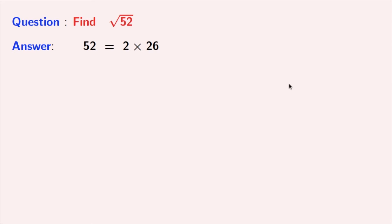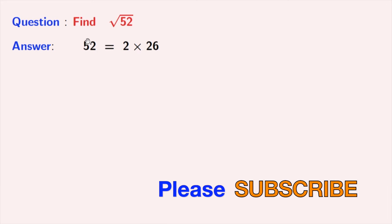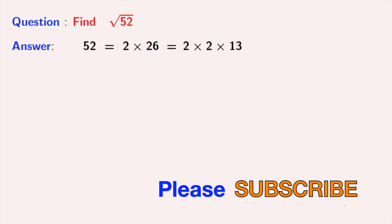At first, we have to find the factors of 52. Note that 52 is an even number, so it will be divisible by 2. So we will write it as 2 times 26. Now, again we have to factorize 26, and this is also an even number, that means it will also be divisible by 2. So 2 times 2 times 13 is equal to 52.